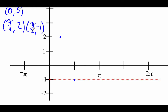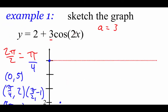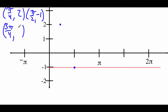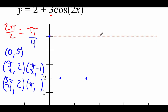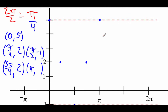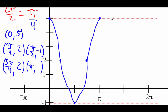Adding π/4 to π/2 gives 3π/4. Plugging in: 2 times 3π/4 is 3π/2, cosine of 3π/2 is 0, times 3 is 0, plus 2 gives 2. So at 3π/4 we're back up at 2. Then 3π/4 plus π/4 is 4π/4, which equals π. Plugging in: 2 times π is 2π, cosine of 2π is 1, times 3 is 3, plus 2 gives 5. So at x = π we're back up at 5. Now I'll connect all these dots with a curve — there's one full cycle of our cosine graph.